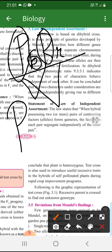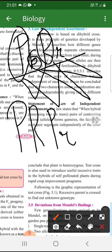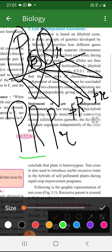Toh yaha pe kya banega gametes? Capital P and capital R. Capital P and small r. Next gamete. Small P and capital R. Small P and small r. So, the fourth one is small P with capital R. Small P with small r. So, how many gametes has been made? One, two, three, four.